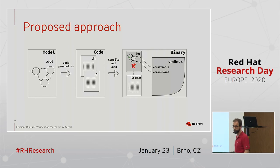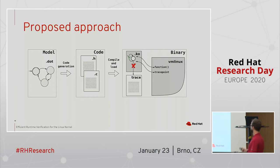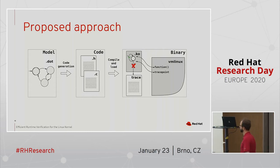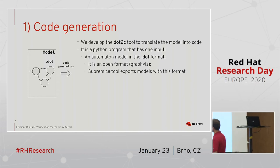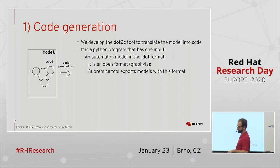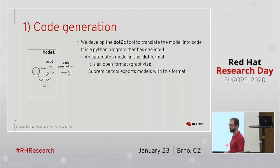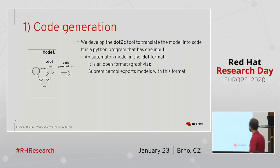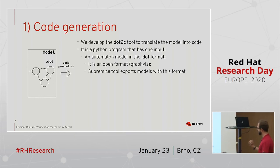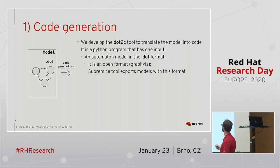Here's the proposed approach. We have models created in the dot format — automata models. We generate code and run it. First, it's feasible to hand-translate a small automaton into C code, but that's not practical when you have 9,000 states — I would lose a lot of time writing that code. But since it's a formal specification, we can translate it into code automatically. We developed a Python script that translates the automata into C code.